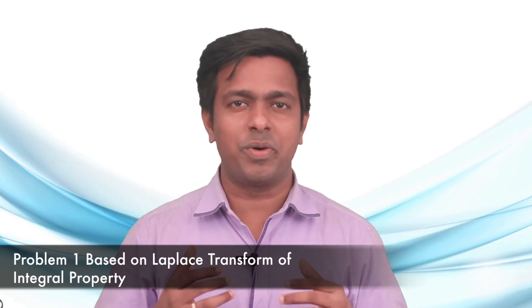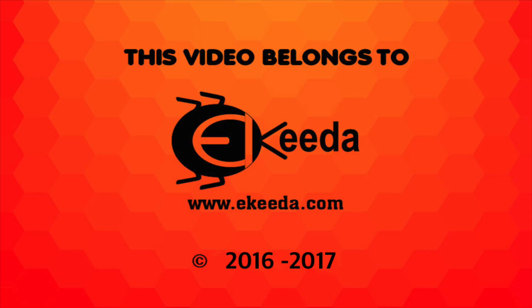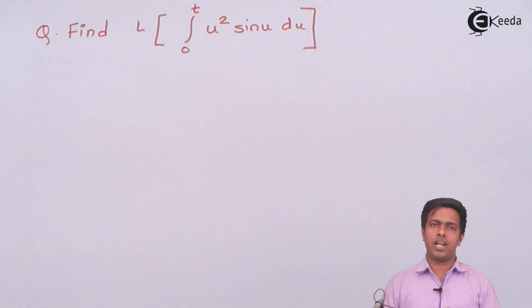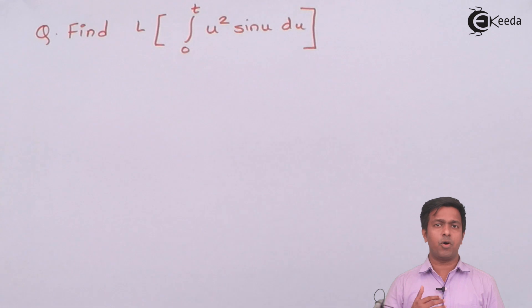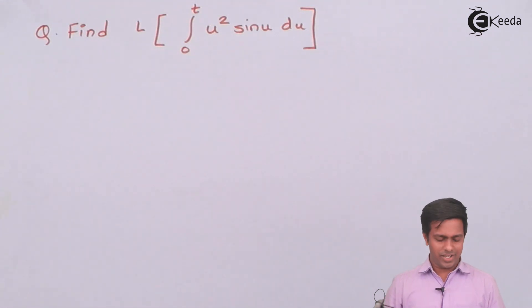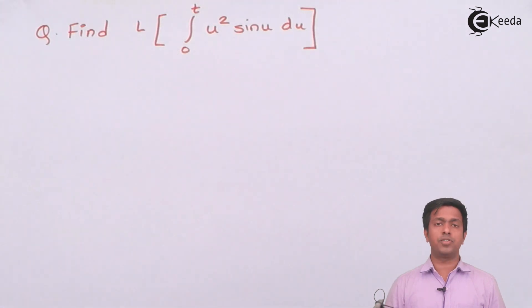Hi students, after learning the Laplace transform of integral property, we are going to start with numericals based on the Laplace transform of integral theorem. We will see different numericals and understand how to apply that theorem to get the value of the Laplace transform of a given function of t. Here we have to find the Laplace transform of the integral from 0 to t of u² sin(u) du. Just looking at the problem, we know this question is from Laplace transform of integral because we always have integration from 0 to t.